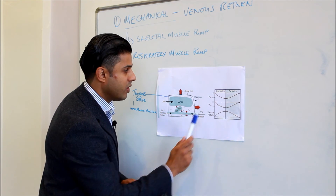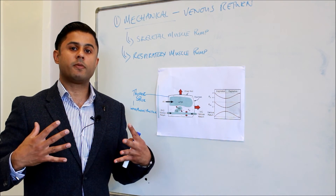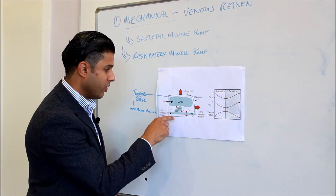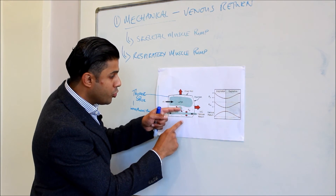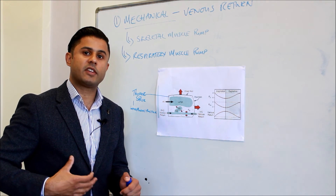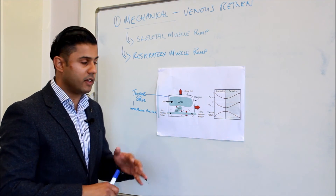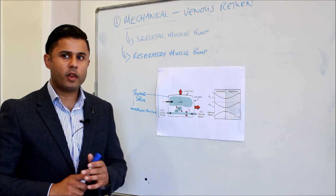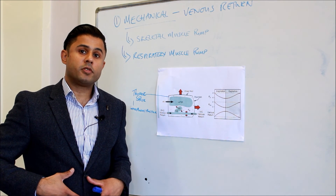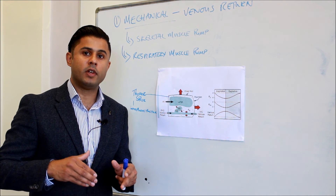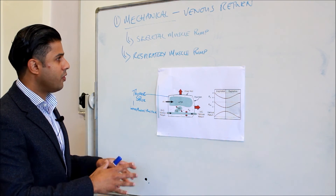Venous return via the respiratory pump is a combination of: a reduction in intrapleural pressure because I breathe in, my rib cage expands, my diaphragm flattens, and a reduction in the pressure of the right atrium and right ventricle. The red arrows show the chest wall expanding, the diaphragm flattening, and the heart getting bigger. The sympathetic nervous system also causes venoconstriction lower in the veins. When the diaphragm flattens, it squeezes the abdominal muscles and their blood vessels — blood moves from arterioles into venules and into the vena cava, back towards the heart.